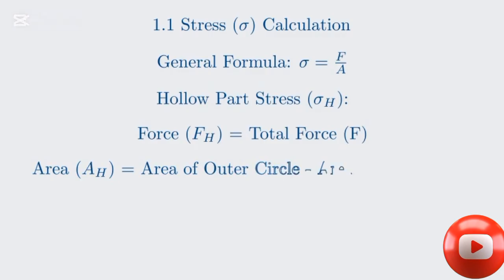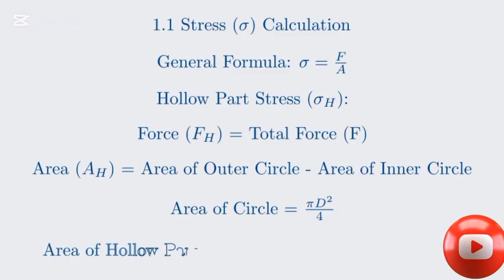This is calculated as the area of the outer circle minus the area of the inner drilled hole. Using the formula for the area of a circle, pi times diameter squared divided by 4, we get pi times the outer diameter D squared minus the inner diameter d squared, all divided by 4.